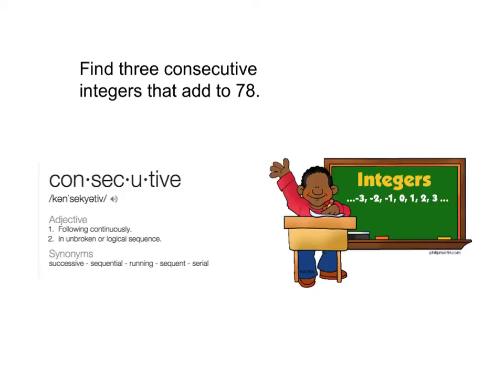To do this problem, you need to know a couple different things. You need to know what consecutive means. Consecutive means following continuously in an unbroken or logical sequence, one after another. So 1, 2, 3, 4.